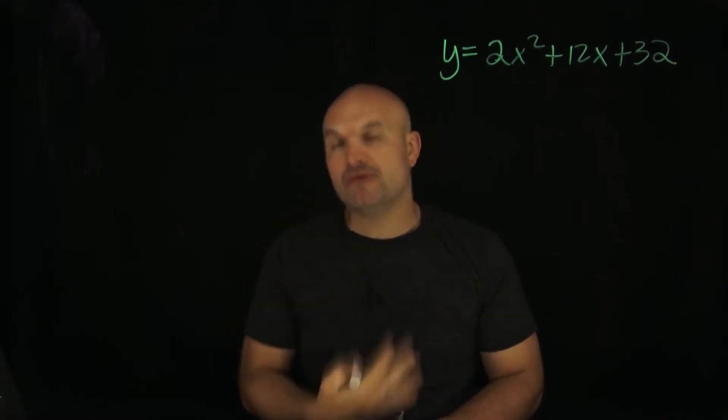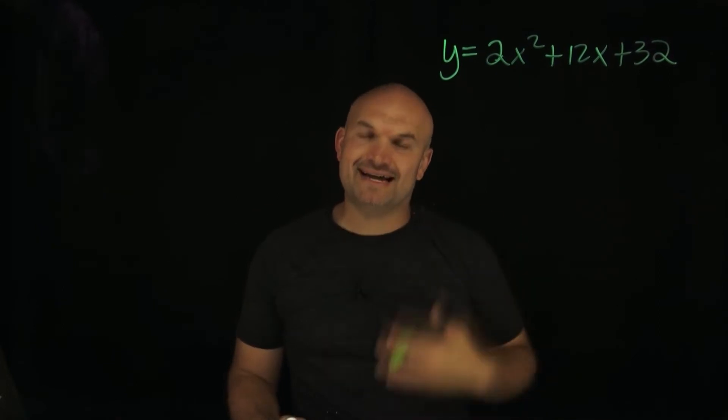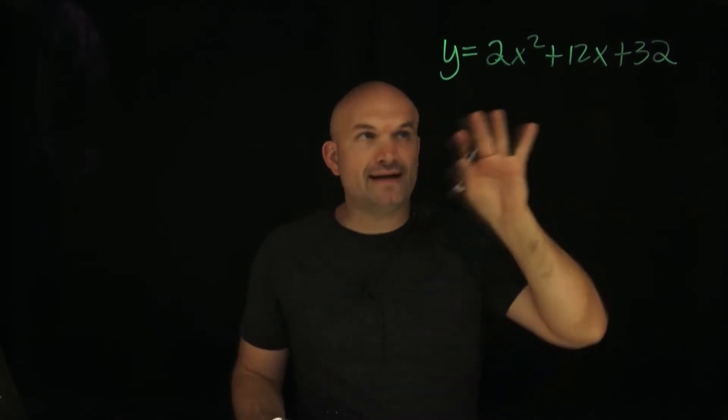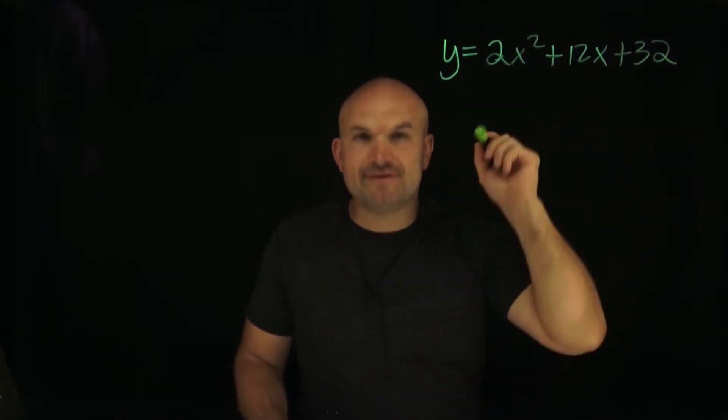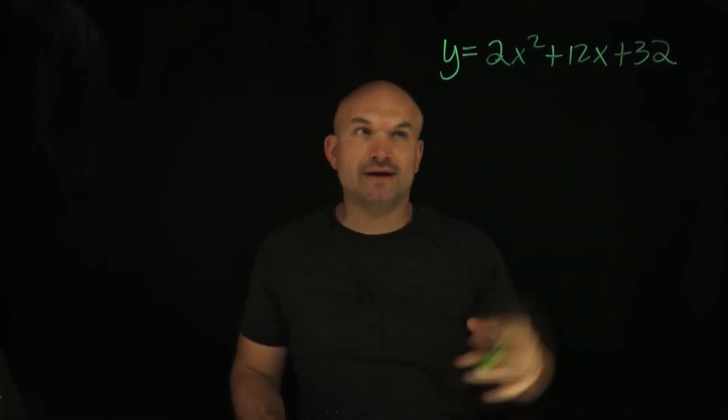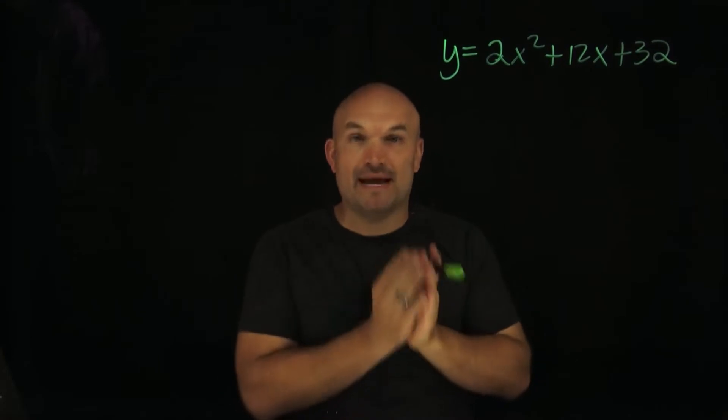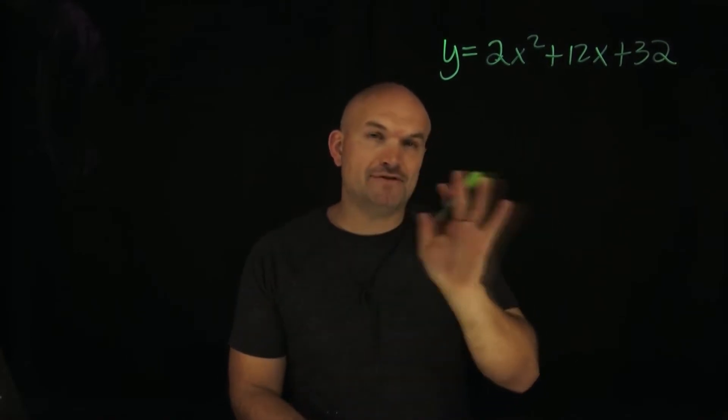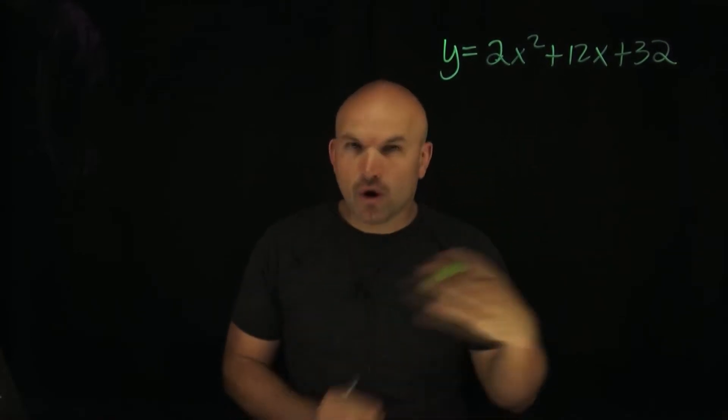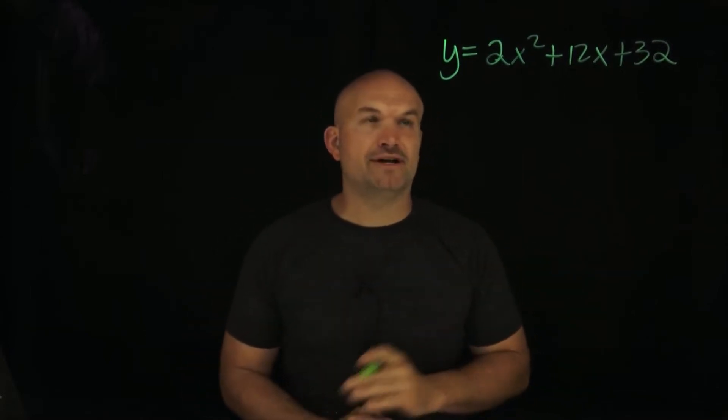Now, the first thing that I always mention to students, or at least try to remind them time and time again, is whenever you're trying to complete the square, you have to make sure that your coefficient of x squared is always a positive 1. Otherwise, you have to go ahead and factor it out, or you could divide it on both sides, but I'll get to that in a later video.